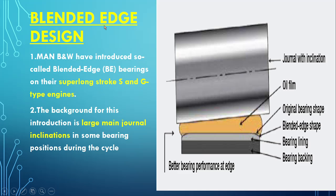So what is the blended edge design? This blended edge design has been implemented in a thin shell bearing. As you can see, this is the journal with an inclination, this is the oil film, this is the bearing backing, and this is the bearing lining. At the end of the bearing there is a curvature that has been formed — this curvature is called the blended edge.